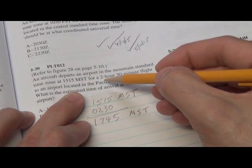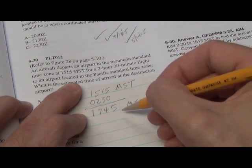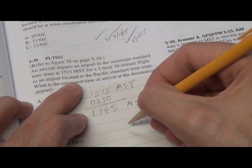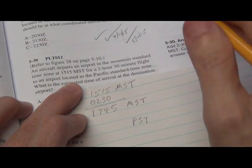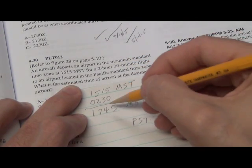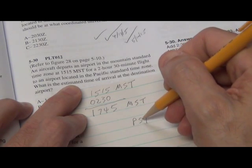They say he landed in an airport located in Pacific Standard Time. So he obviously went west. So we write down Pacific Standard Time. We need to convert to the local time. You don't go to Zulu until you know the local time.